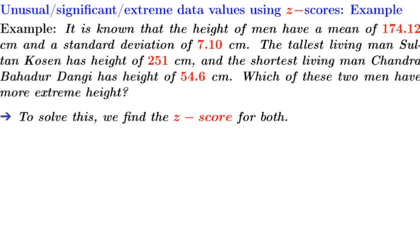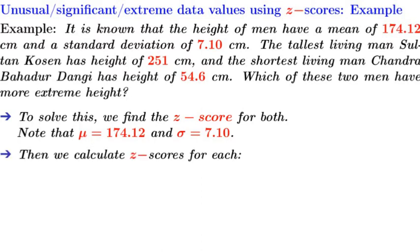To solve this, we find the z-score for both. Note that mu equals 174.12 and sigma equals 7.10. Then we calculate z-scores for each.